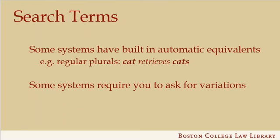Some systems have built-in automatic equivalents. Lexis and Westlaw both recognize regular plurals as an automatic equivalent. If you include the word cat in a Lexis or Westlaw Boolean search, you will automatically retrieve documents that have the word cat or the word cats. On Lexis, you will get the same results if you use the word cats instead of cat. On Westlaw, if you put the word cats in your search, you will not retrieve the singular.